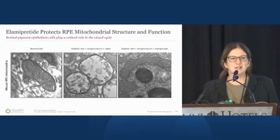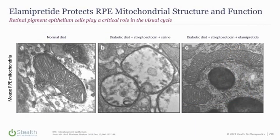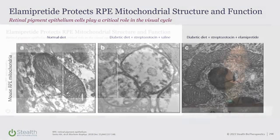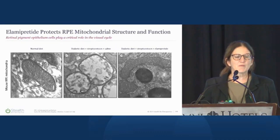Looking at an electron micrograph from a diabetic mouse model of RPE cells, you can see a healthy mitochondria on the left. In the middle, with disease, you see the cristae gone, and then restoration again with L-imipritide.